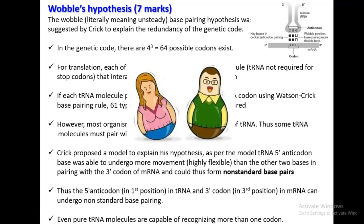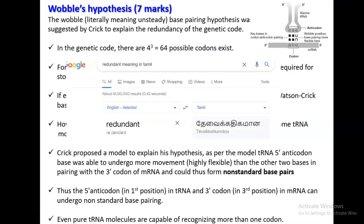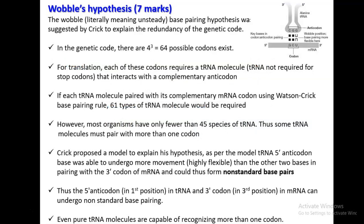The next part of this lecture is related to the Wobble hypothesis. The literal meaning for Wobble is unsteady, so this kind of unsteady nature is associated with base pairing. The Wobble condition of base pairing was suggested by Crick to explain the redundancy of the genetic code. Here, redundancy means that for 20 amino acids, more than 64 different kinds of genetic codes exist. So, why do this many genetic codes exist? An explanation was provided in the form of the Wobble hypothesis.